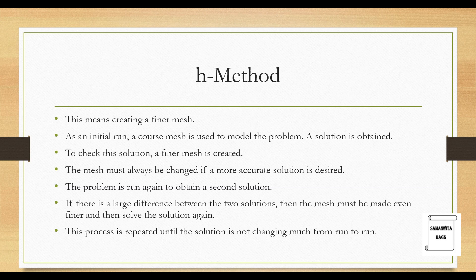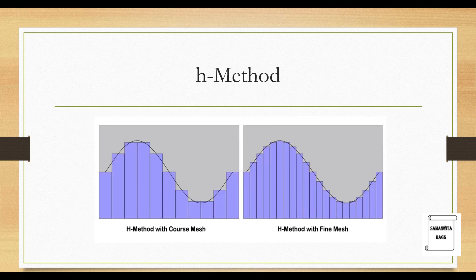We initially create a mesh. We check what is the solution and then we create a finer mesh. The mesh must always be changed if a more accurate solution is desired. The problem is run again to obtain a second solution. If there is a large difference between the two solutions then the mesh must be made even finer and then solve the solution again. So what you can do is you can continue making your meshes finer till you don't get a better solution. This process is repeated until the solution is not changing much from run to run. So between any two meshes that you have created, if the solution doesn't vary much then you can assume that you have converged your solution. You can see here this is the H method with coarse mesh and then when you increase the number of meshes you can see that your solution is getting better and this is the step size as you can see that is this distance which is now reducing from coarse to fine.